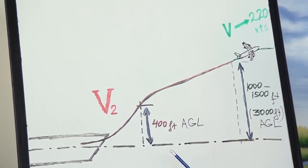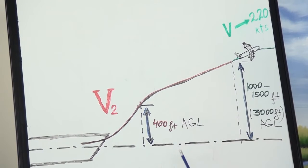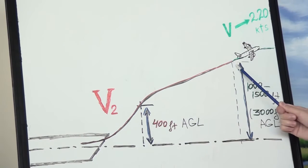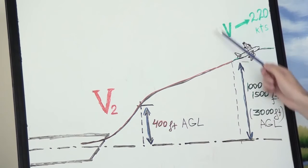At 400 feet, you need to select or just check your lateral navigation and continue climbing on take-off safety speed V2 till your acceleration altitude. On acceleration altitude, climb thrust needs to be set and acceleration from V2 to flaps up or cruise speed should be initiated.